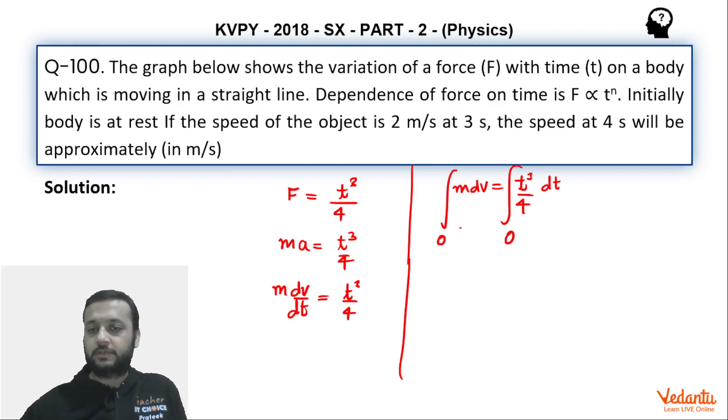At time 0 seconds, the velocity was 0. Let's say at time t, velocity becomes V. So from here, mV will become 1 by 4 will come out. T cubed dt to the power 4 by 4. Hence, we can say that velocity becomes 1 upon 16m t to the power 4. Now, it's a very easy question.